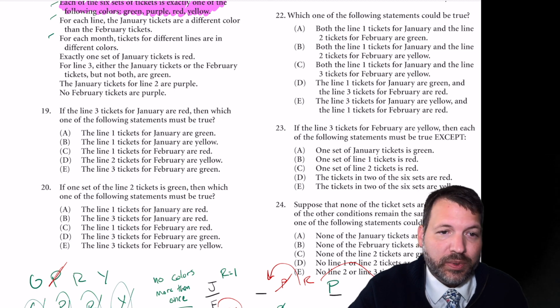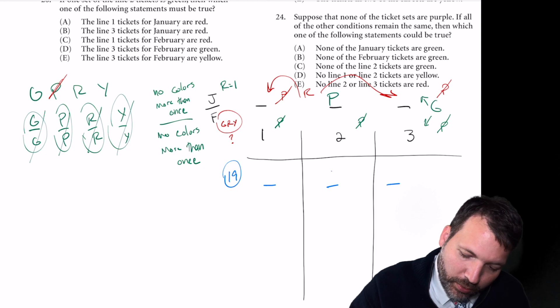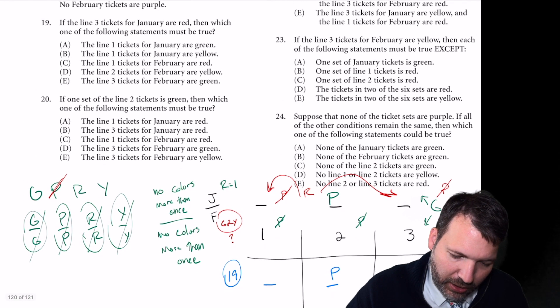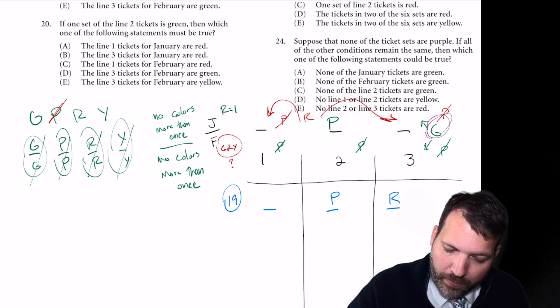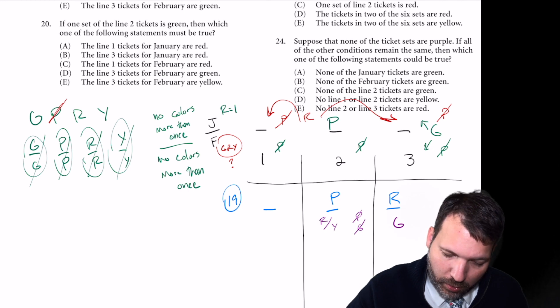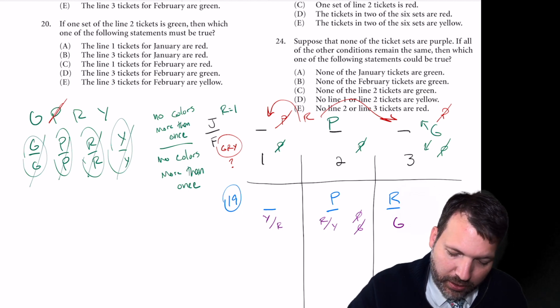Can't do that here because number 19 is just a standard specific style question. If the line three tickets for January are red, which one of the following statements must be true? So let's carry down what we know, which is that line two January is purple, and then for this particular question, line three January is red. What else can we figure out here? Remember, for line three, something has to be green, so we're going to have to put February line three as green. That means that line two, we know can never be purple, now it also cannot be green. So can we tell between red and yellow? I don't think so. It's either red or yellow. And then we know that line one is not purple, so it would just flip. As far as line one January goes, we've already used red. I think it could be green or yellow.